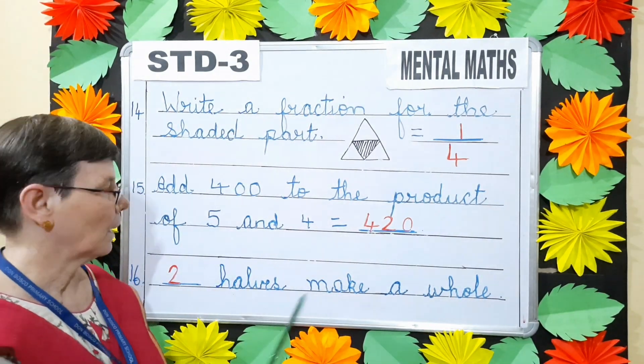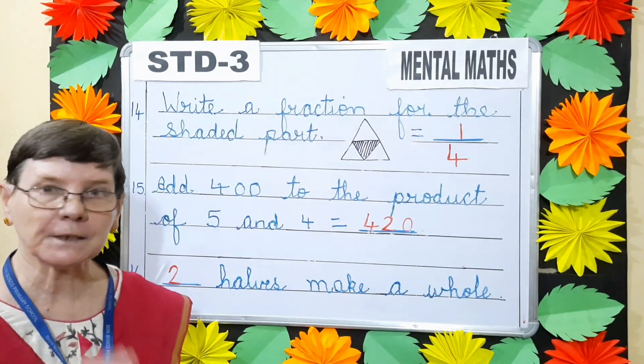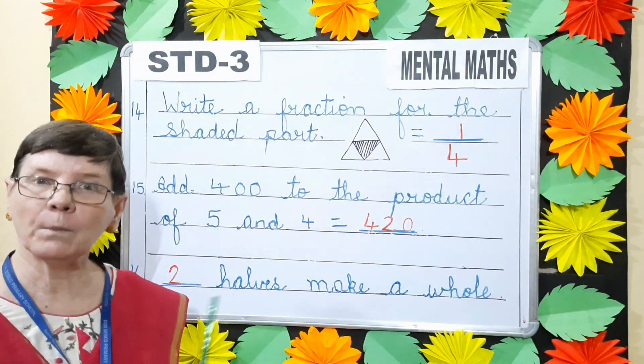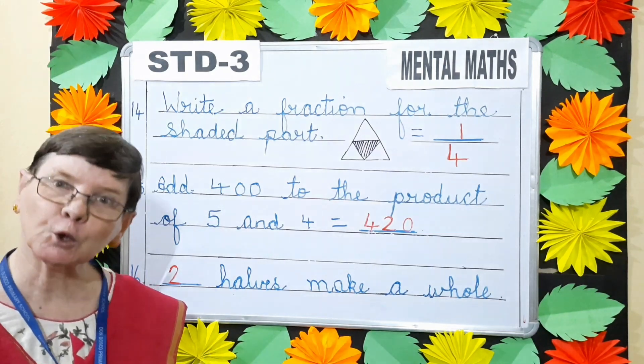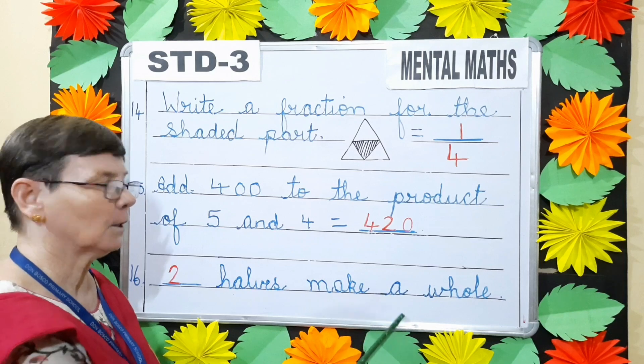Dash halves make a whole. Take an apple, cut it into half. How many halves will you get? 2 halves. So 2 halves make a whole.